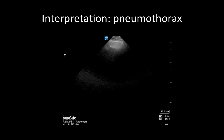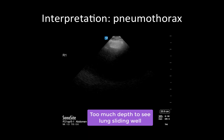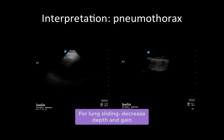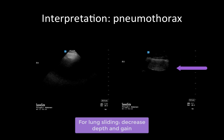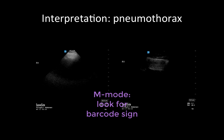Moving on to common pitfalls with image interpretation. One common mistake in the interpretation of pneumothorax is commenting on a lack of lung sliding when your image is taken with too much depth. To optimize your image, significantly decrease your gain and depth. This highlights lung sliding and makes it much easier to spot a potential pneumothorax. Note that M-mode may be used to look for a barcode sign as another means of identifying pneumothorax; however, this adds very little information beyond the 2D finding and is typically not used for this purpose.